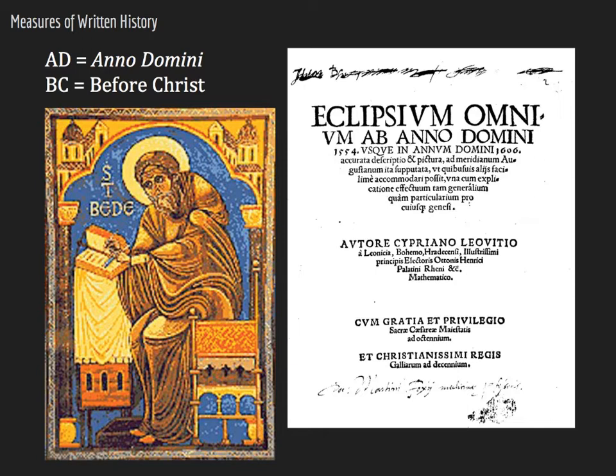In our modern world, historians use a chronology based on an earlier European, and explicitly Christian, designation. In the 6th century, Christian Europeans began marking the time after the birth of Jesus of Nazareth by the abbreviation AD, meaning anno domini, or 'in the year of our Lord.' In the 8th century, an English monk began using BC, meaning 'before Christ,' to mark all the years of human history prior to Jesus' birth. Fun fact: Europeans had not yet been exposed to the concept of zero when the AD-BC system came into use. Thus, there is no year zero in this chronology.